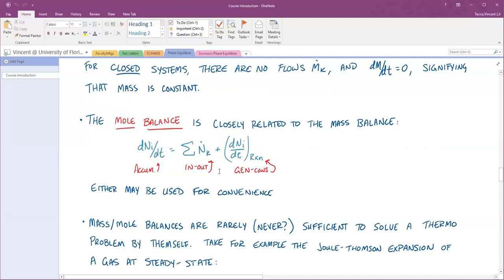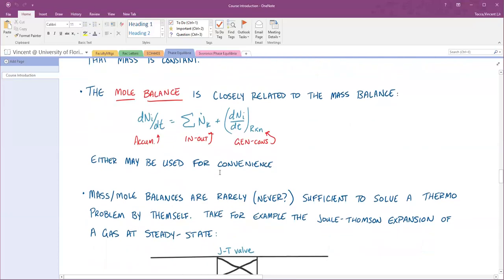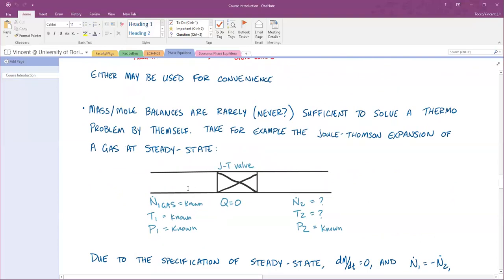A lot of times the mass and mole balance will be the easiest part of the problem you'll have to solve. Oftentimes it's just trivial. It doesn't tell you much information that you need to solve the problem by itself. Take, for example, the Joule-Thompson valve. You may have talked about this in your thermodynamics class. You have a gas flowing in a pipe where you know the flow rate, n dot 1, and the temperature and pressure. By flowing through this Joule-Thompson valve, it's going to expand the gas and decrease the pressure.